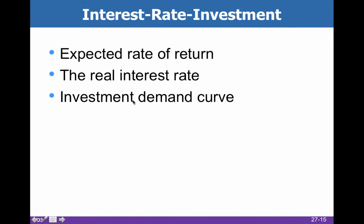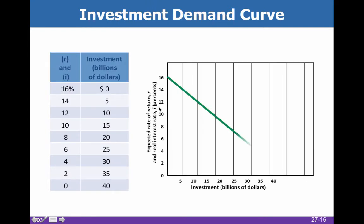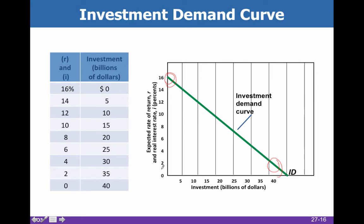The expected rate of return and the real interest rate determine our investment demand curve. Here is our downward-sloping investment demand curve. When the expected rate of return is really high, it almost doesn't matter what the interest rate is — we're going to invest. Businesses invest first in their most likely to pay off opportunities. An investment with only a 2% expected rate of return won't happen unless the real interest rate is below 2%.